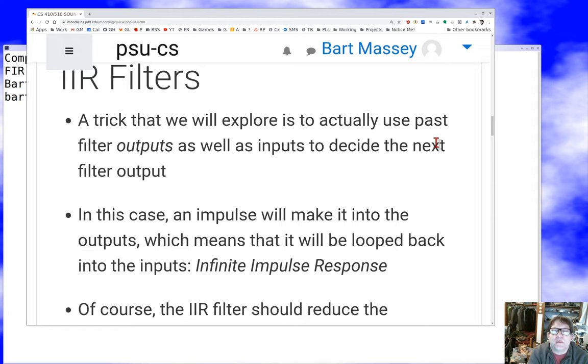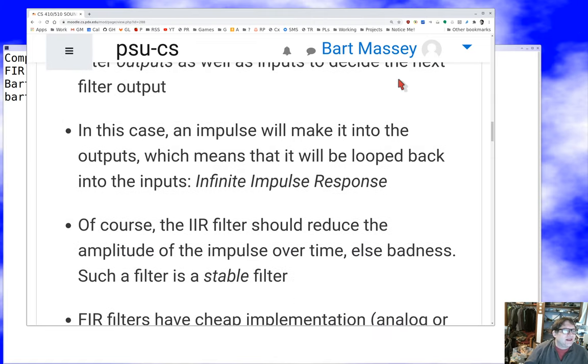The trick with infinite impulse response filters is we not only convolve samples with coefficients for past samples, we also convolve with coefficients for past outputs. That is, we convolve into the future. The IIR filter uses the output that was previously put out as another input to decide how to filter.